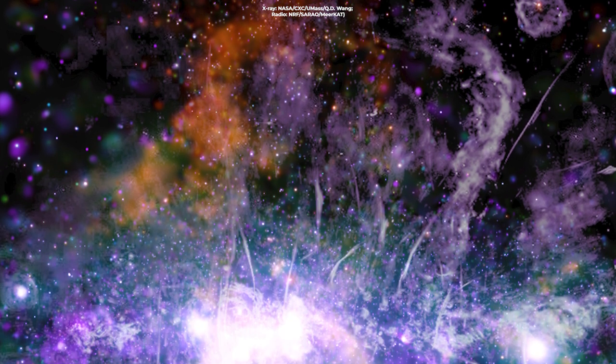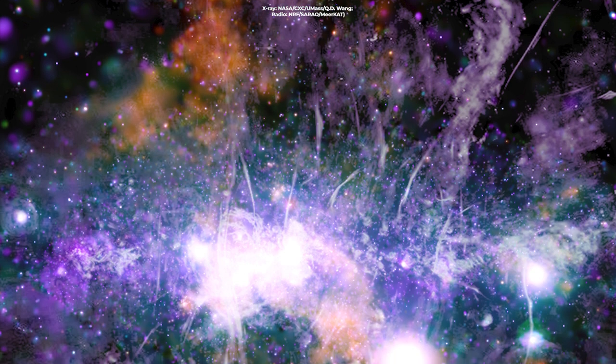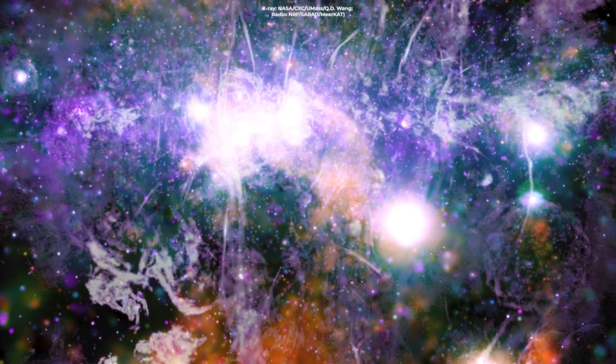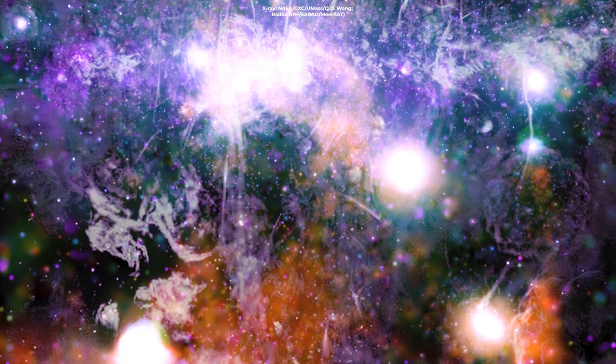X-rays from Chandra are orange, green, blue, and purple, showing different X-ray energies. Meanwhile, the radio data from Meerkat are shown in lilac and gray.